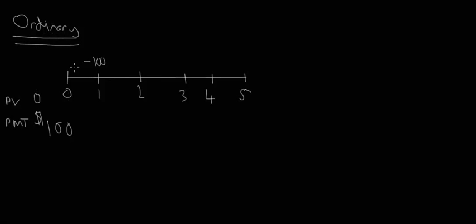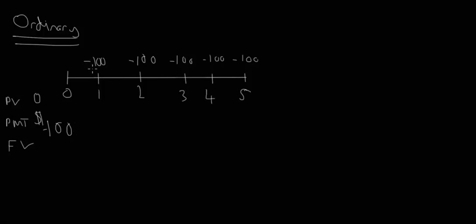In a retirement plan where you put a lump sum in today, that would be your present value, and you'd ask how much it can afford to pay out until the future value is zero. But in this example, present value is zero, and the payment is negative $100. That goes on for five years — minus $100 at periods one, two, three, four, and five. The future value is what we want to solve for: if we put in $100 every year for five years at 10%, how much money will be in the account at the end of five years?